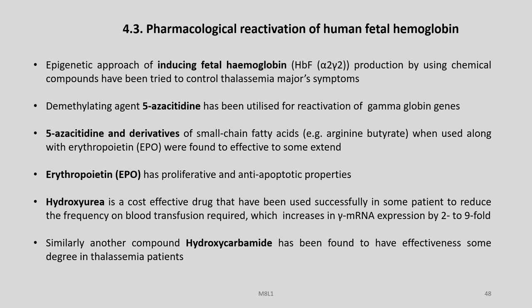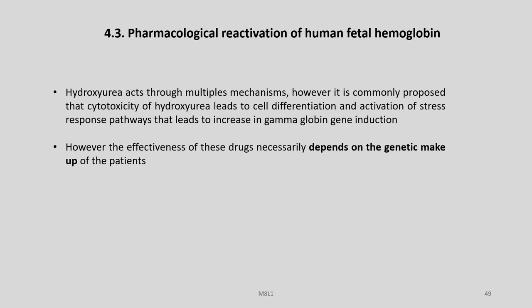Pharmacological reactivation of human fetal hemoglobin is also one of the practical therapeutic approaches for thalassemia. The epigenetic approach of inducing fetal hemoglobin production using chemical compounds has been tried to control thalassemia major symptoms. Demethylating agent 5-azacitidine has been utilized for reactivation of gamma globin genes; 5-azacitidine and its derivatives, small chain fatty acids, when used along with erythropoietin were found to be effective to some extent. Hydroxyurea is a cost-effective drug that increases gamma mRNA expression by 2 to 9 fold. Similarly, hydroxycarbamide has been found effective in certain thalassemia patients.